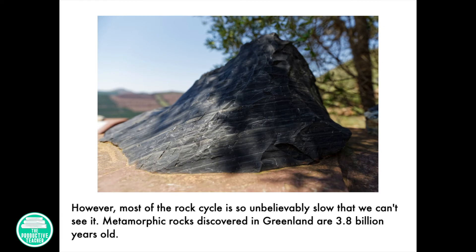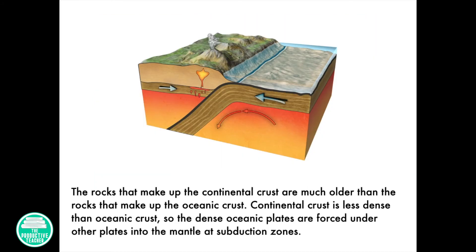Metamorphic rocks discovered in Greenland are 3.8 billion years old. The rocks that make up the continental crust are much older than the rocks that make up the oceanic crust.